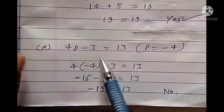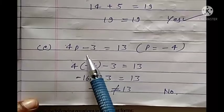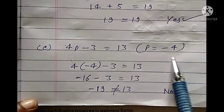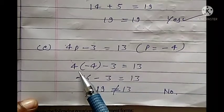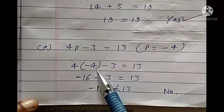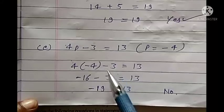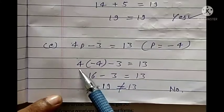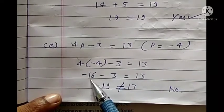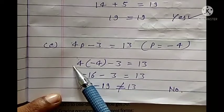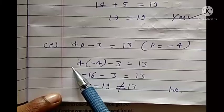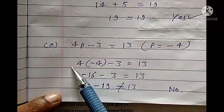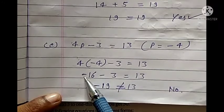Let's see question (e): 4P minus 3 equals to 13, where P equals to minus 4. We have to substitute P with minus 4. So 4 times minus 4 minus 3 equals to 13. Now, 4 times 4 is 16. When there is no sign for a number, it is plus. So plus times minus gives minus. Therefore, minus 16 minus 3. When we have minus and minus, we add them — so minus 19.